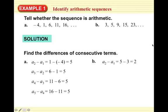Let's look at part B. The sequence is 3, 5, 9, 15, 23. A2 minus A1 is 5 minus 3, which is 2 — that makes sense, 3 plus 2 is 5. But then A3 minus A2 is 9 minus 5, which is 4. Because these differences are not the same, the sequence in part B is not arithmetic.